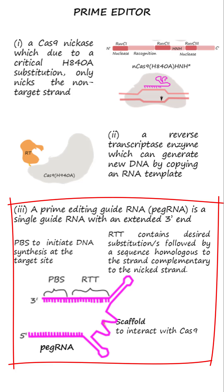The pegRNA is a single guide RNA with an extended 3' end. The extension on the 3' end contains a primer binding sequence (PBS) to initiate DNA synthesis at the target site, and the reverse transcriptase template (RTT) containing desired substitutions for repair, followed by a sequence homologous to the complementary strand.